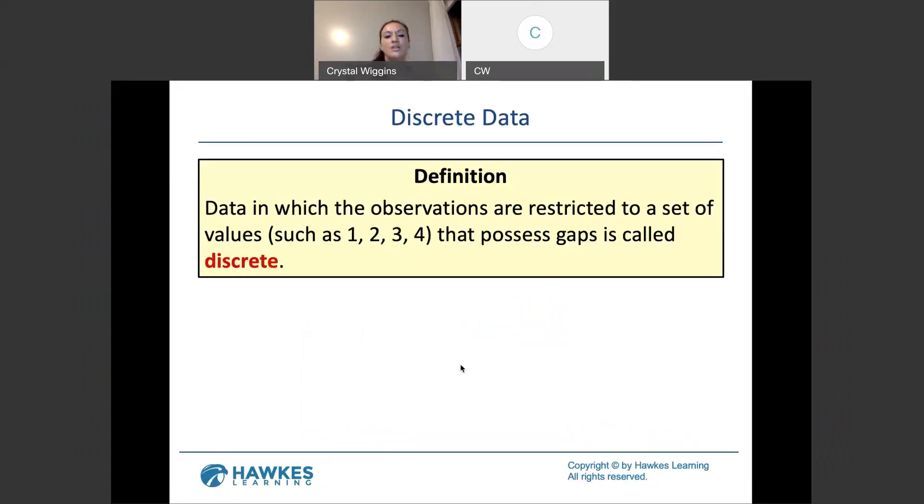Data in which the observations are restricted to a set of values that possess gaps is called discrete. Now that made no damn sense, right? So discrete data is countable. Countable whole numbers: 1, 2, 3, 4, 5. You can count. If you know that you don't count in the negatives on a typical day, I'm not counting negative plants in my yard, then that's not discrete.